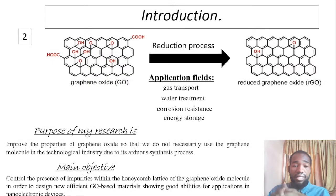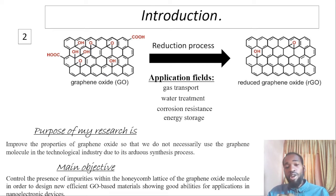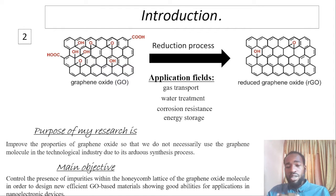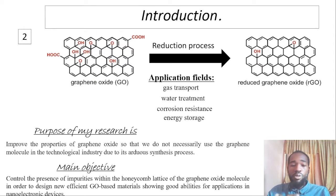As an introduction, graphene oxide is a nanomaterial with a hexagonal carbon structure similar to that of graphene, but with oxidative functional groups on the surface. Due to the ease of synthesizing and high solubility compared to graphene, graphene oxide has been the subject of much work in recent years.